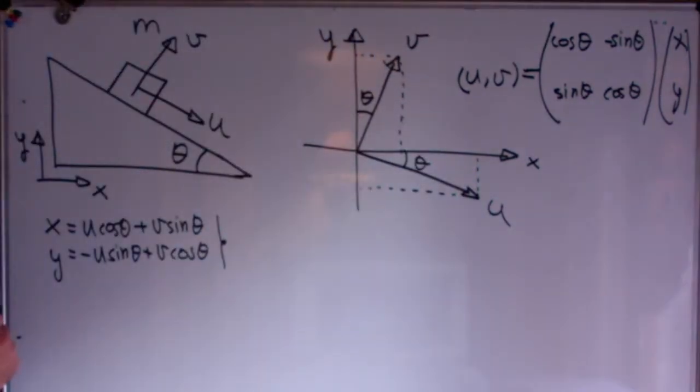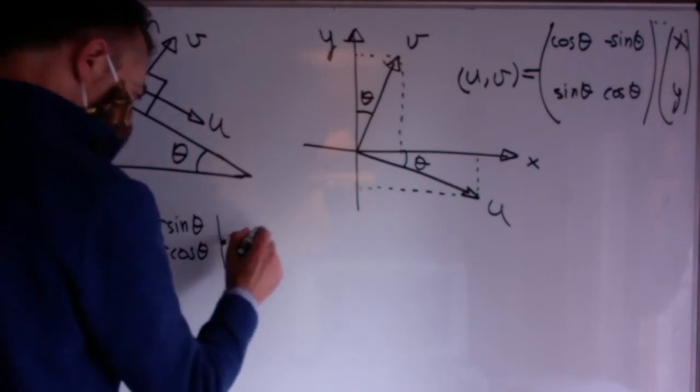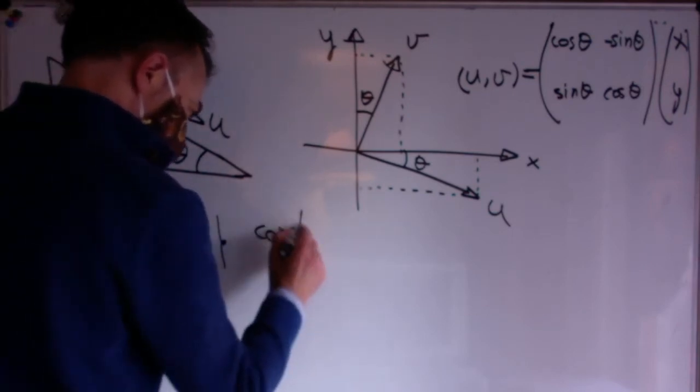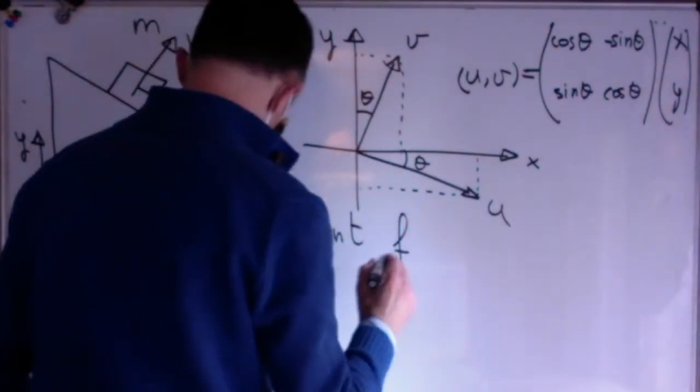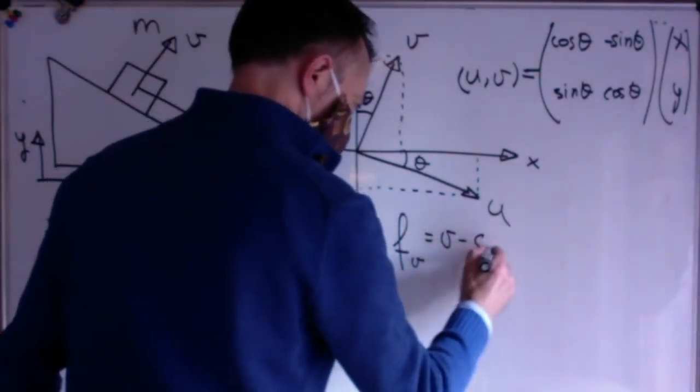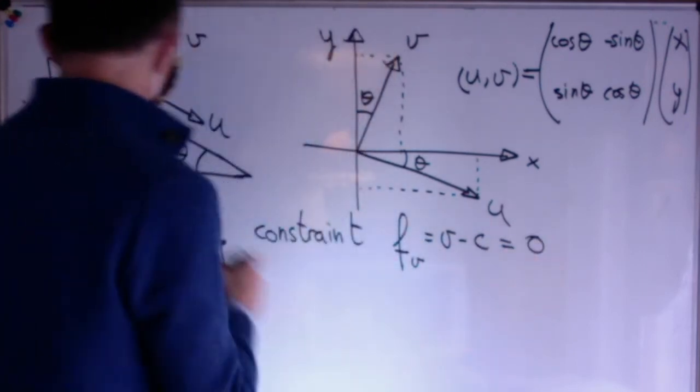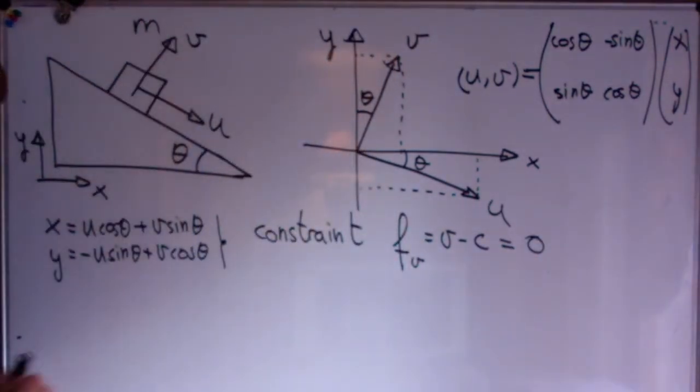Now I need to write the constraint, which in this case is that the block is moving along the u-axis and there is no motion in the v-axis. So I can write f equal to v minus c equal to zero where c is a constant. This constraint equation says that the coordinate v is constant.